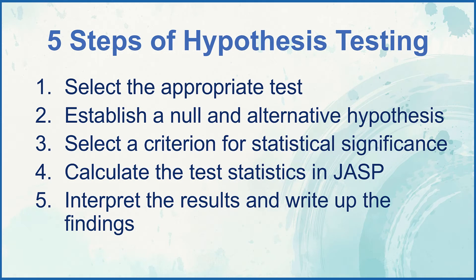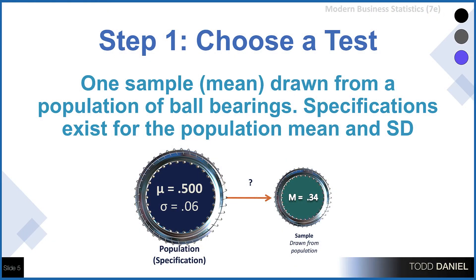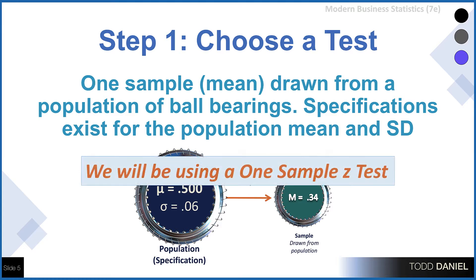We are going to use this setup and our five steps of hypothesis testing to determine what kind of test we will use, then set up and run that test. We have one sample drawn from a population. That sample has a mean, and the specifications will serve as a mean and a standard deviation for the population. Therefore, this is the perfect setup to use a one-sample z-test.